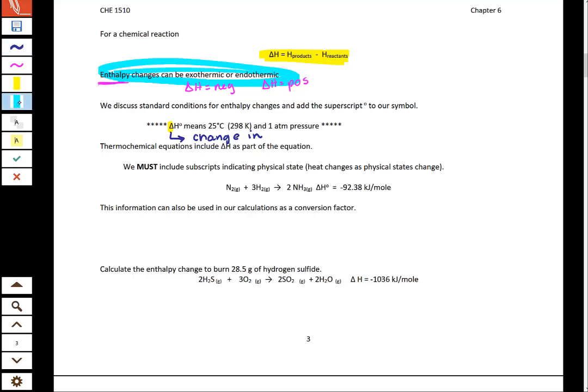The other thing that we're going to see is sometimes our delta H will have this little circular superscript. That little circular superscript is called a knot, spelled n-a-u-g-h-t. This knot means standard.